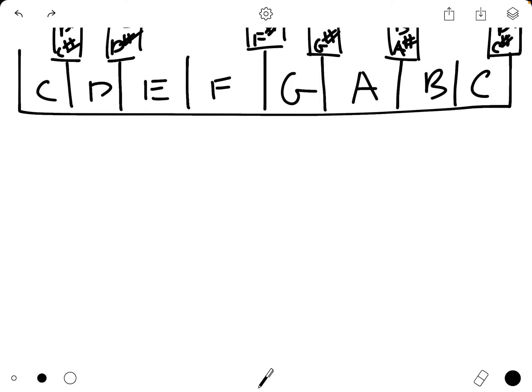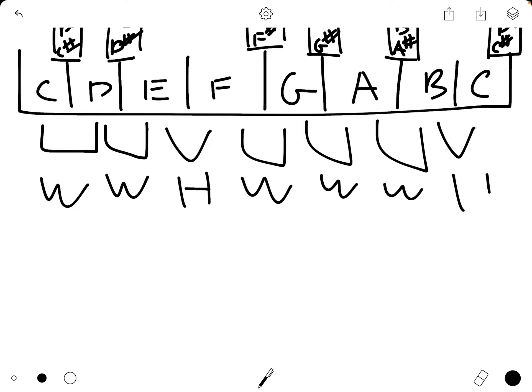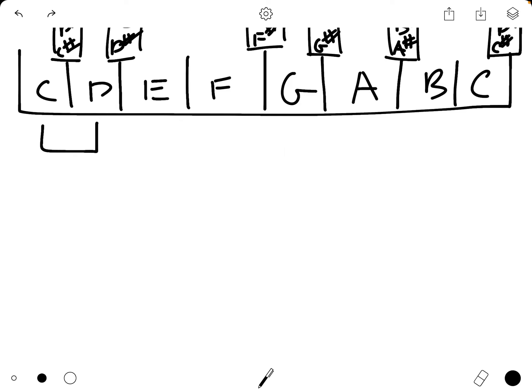And in review of half steps and whole steps, the distance between C and D is a whole step because there is a note in between. The distance between E and F is a half step because there is no note in between. If this doesn't make sense, you should go back to my first video where we talk about whole steps and half steps, and then make your way back up to this video.